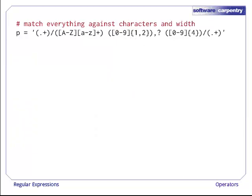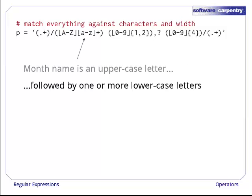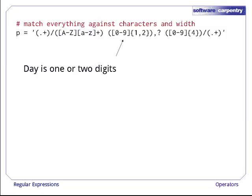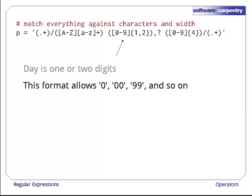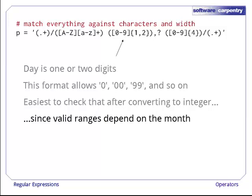Here's our completed pattern. We've added one more feature to it. The name of the month has to begin with an uppercase letter, a character in the set [A-Z], followed by one or more lowercase characters in the set [a-z]. The day is one or two occurrences of the digits [0-9]. Now, this will allow days like 00 or 99. We're going to check for that after we convert the day to an integer because the valid range depends on which month we're in, and that can't easily be done declaratively. Think, for example, about how we would have to handle leap years.